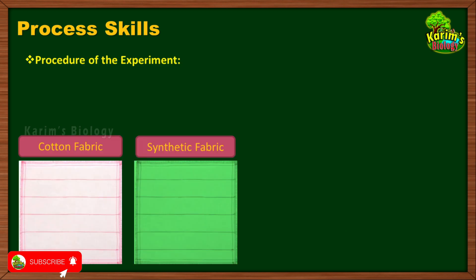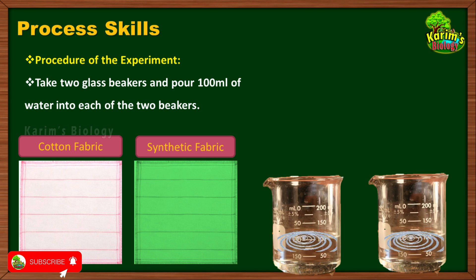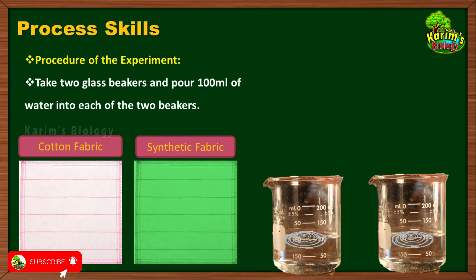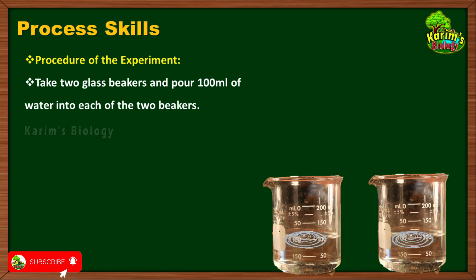In the next step she plans and conducts an experiment to test her hypothesis. In the first step she has taken two glass beakers and poured 100 ml of water into each beaker. Both beakers should have an equal amount of water — 100 ml each. This is the second variable that this girl has to control: both beakers must be filled with the same amount of water.